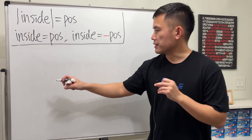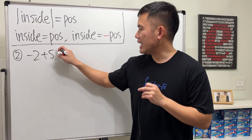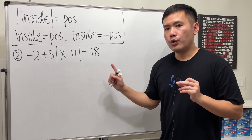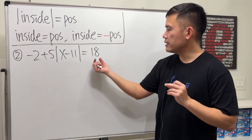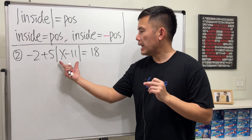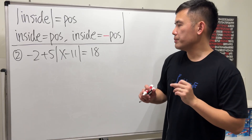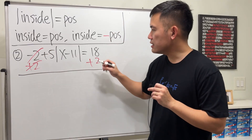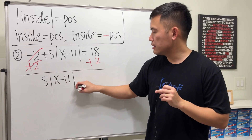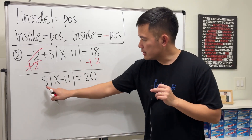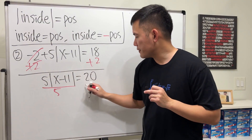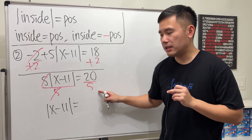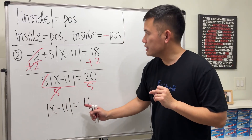Example two: we have negative 2 plus 5 times the absolute value of x minus 11, equals 18. Do not immediately write two equations with positive and negative 18 — the absolute value part hasn't been isolated yet. First, add 2 to both sides to get 5 times the absolute value of x minus 11 equals 20. Then divide both sides by 5 to get the absolute value of x minus 11 equals 4.